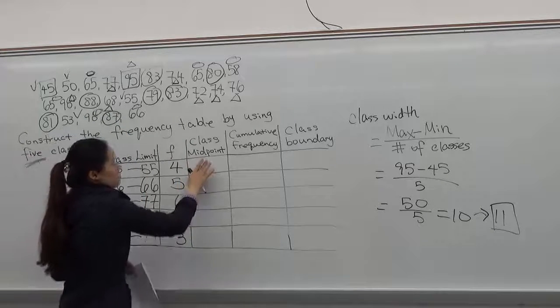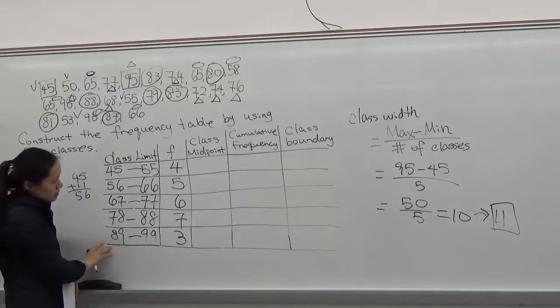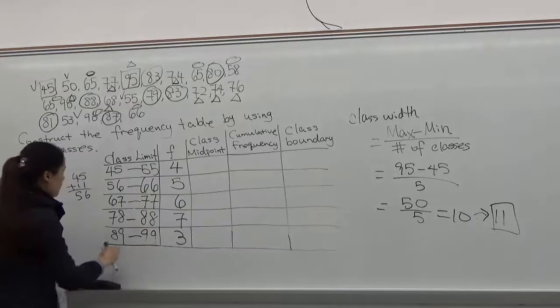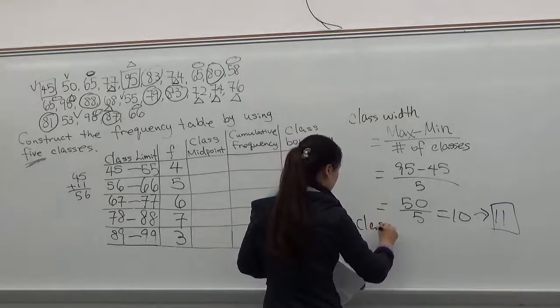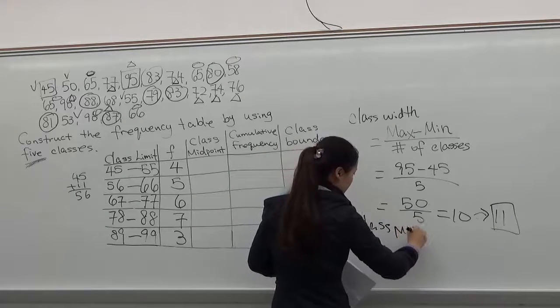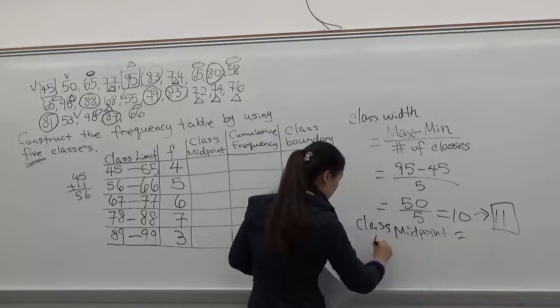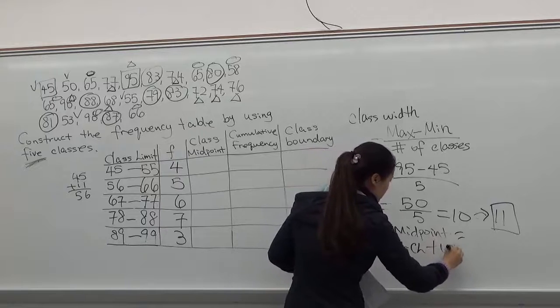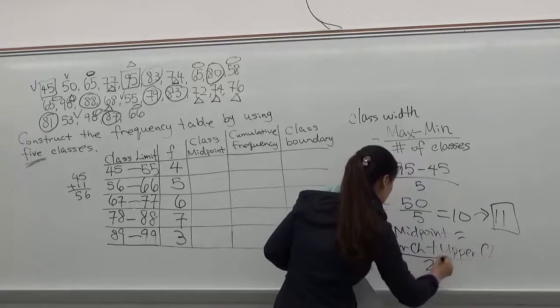To find class midpoint, you will have to use the lower class limit plus the upper class limit. I'm going to write out the formula. Class midpoint. Find the sum, then divide it by 2.